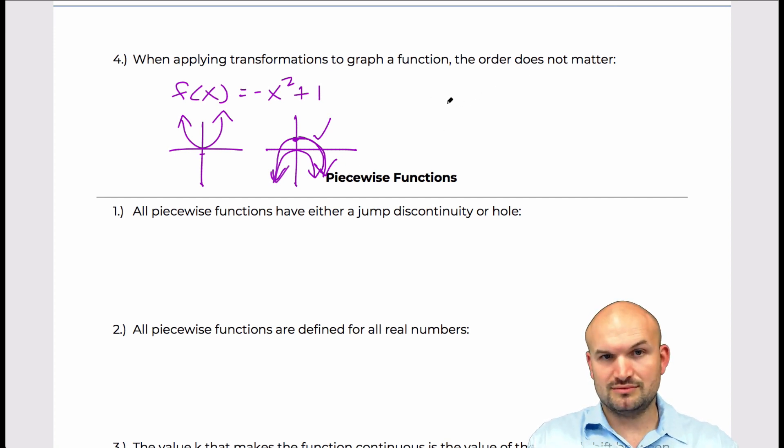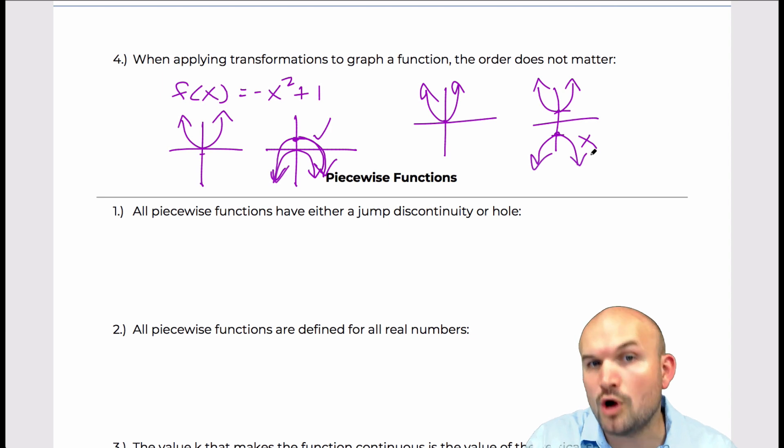However, some students will kind of just follow the operations here and will say, all right, well, let me go and take my parabola and then let me go ahead and shift it up 1 first and then reflect it about the x axis. So then the graph looks something like this, which is wrong.